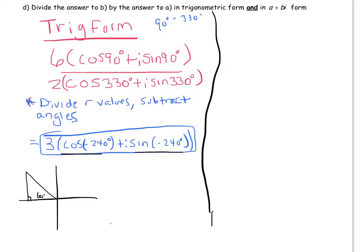Where the reference angle would be 60. So check me on that, but I'm pretty sure that's right. And negative 240 would bring you there, so that would be negative 1 half. This would be a root 3. That's a 2.